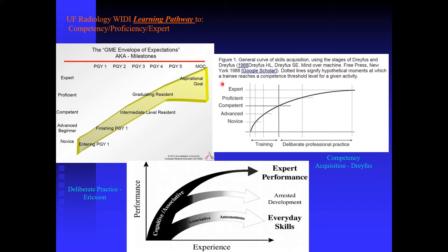There's a lot of really good educational research out there that embodies these ideas. This is by Dreyfus. You can see their curve on how professional competency should be attained. It comes in two chunks: one in training, which agrees with the GME curve, and then it relies on what's called deliberate practice.